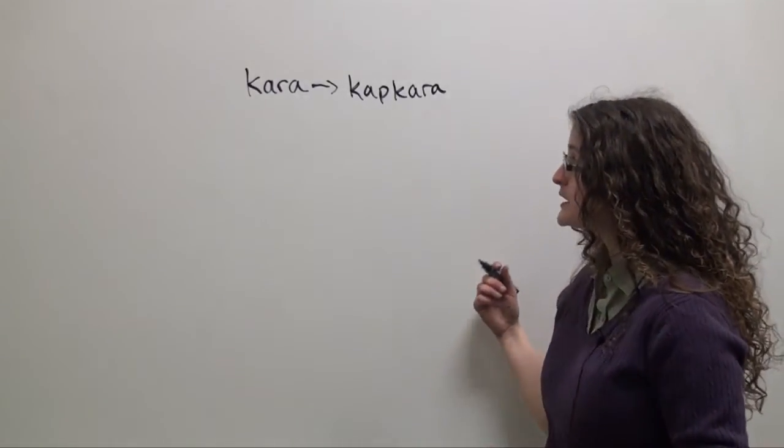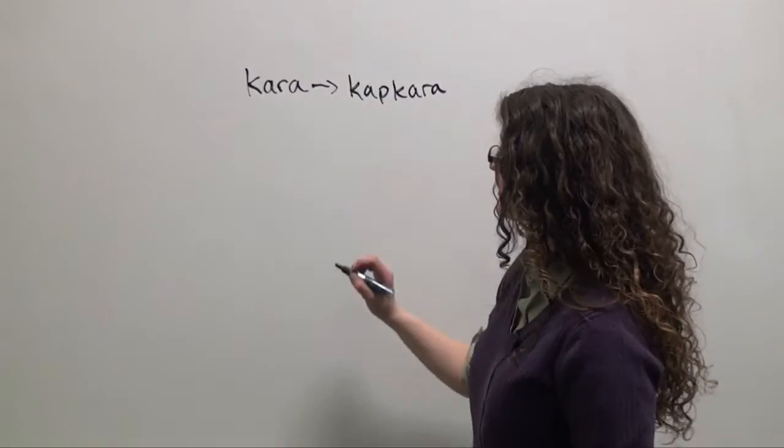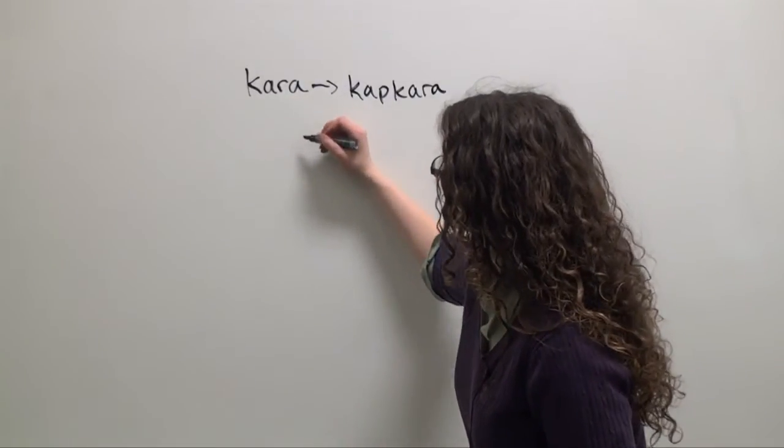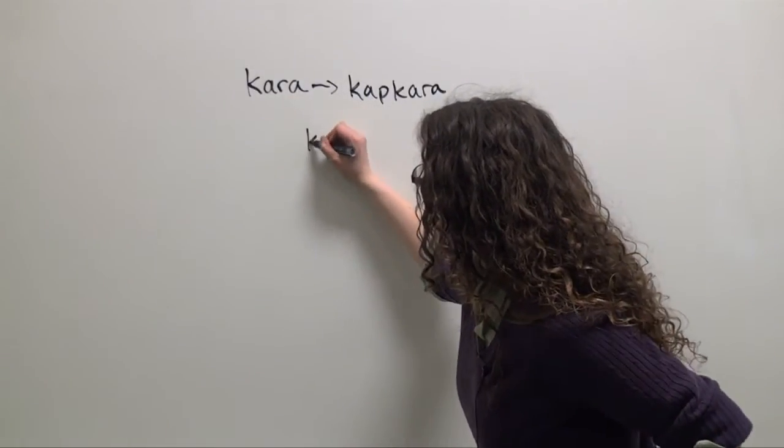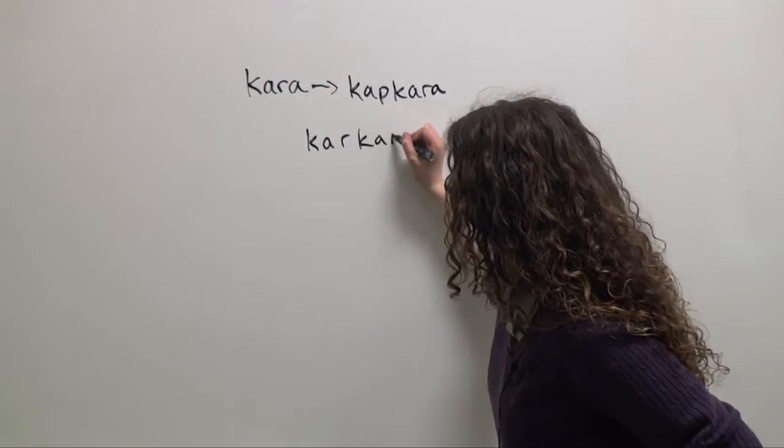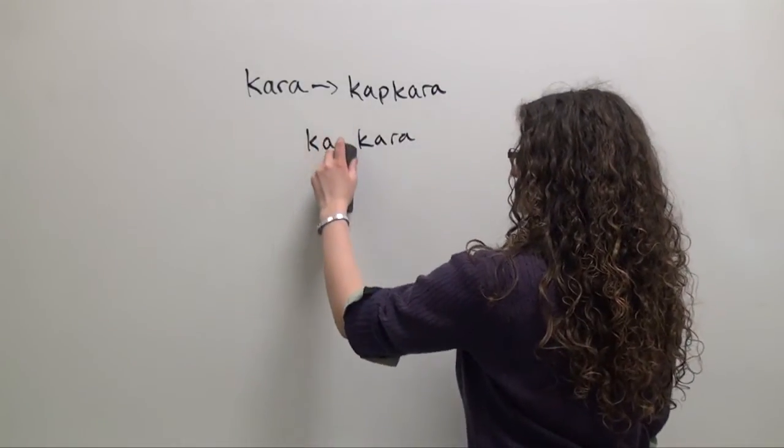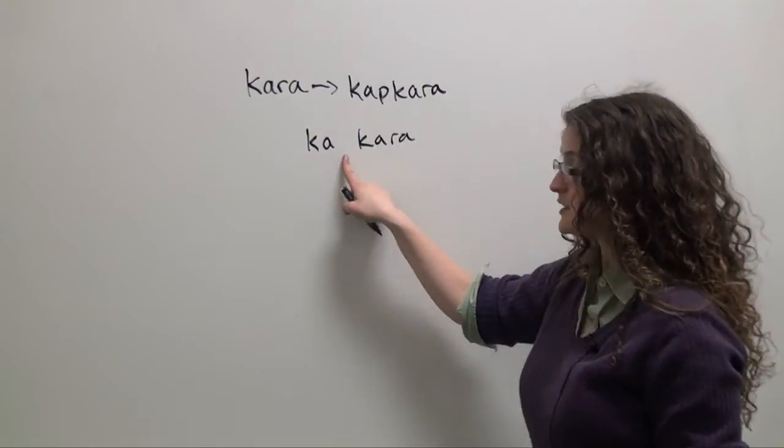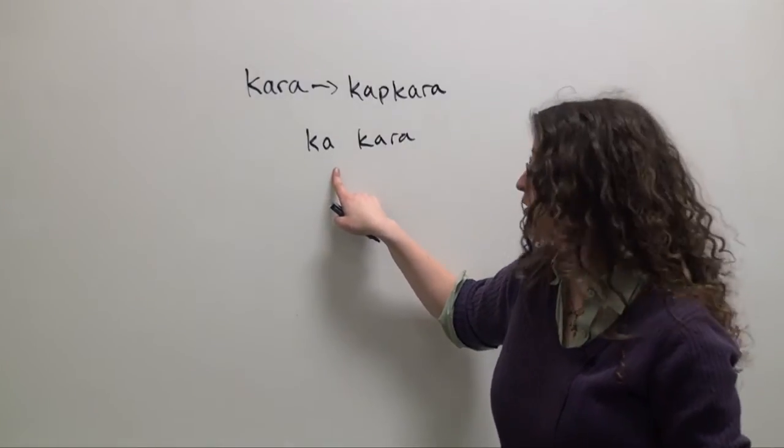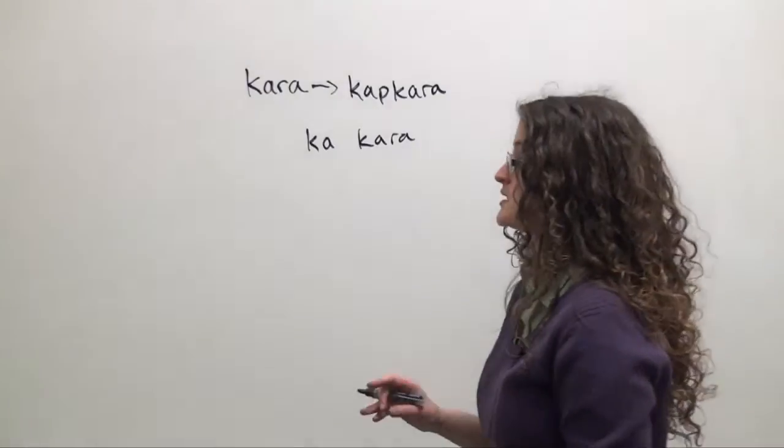What have we done? One, we've taken the first syllable of the word kara and we've repeated it. So we had kar, kara, but then we change the final consonant of the first syllable to one of these four consonants.